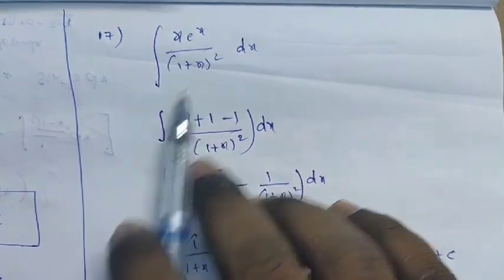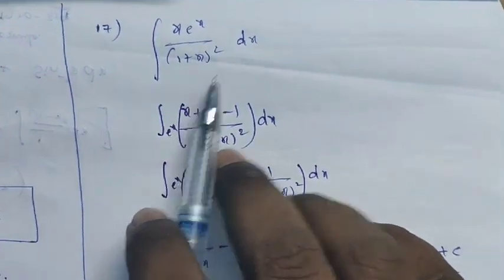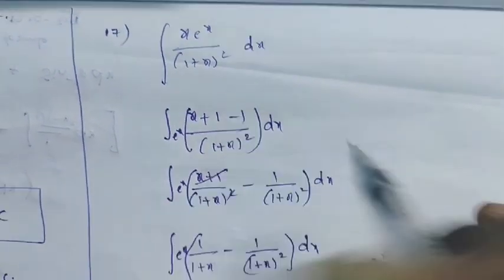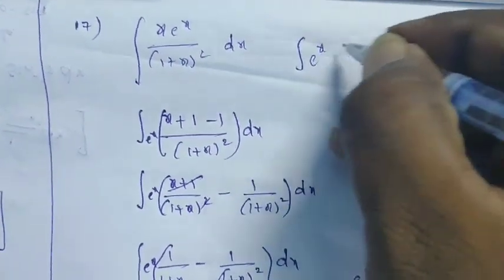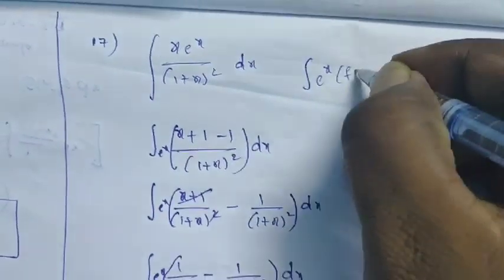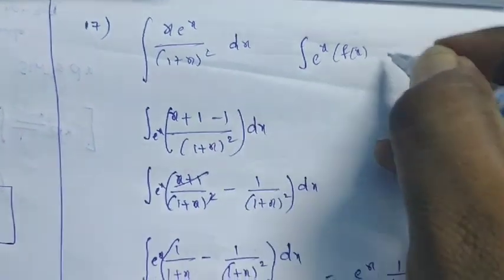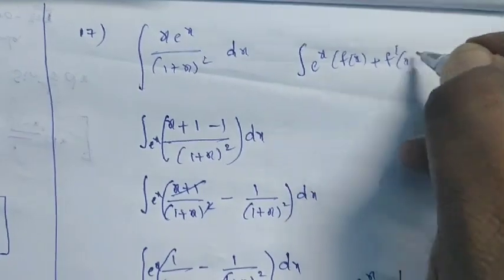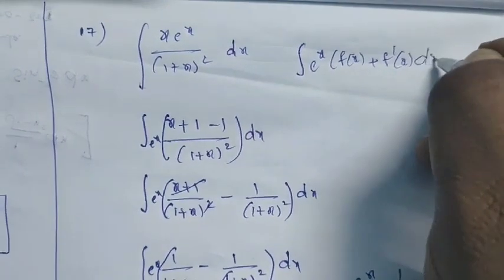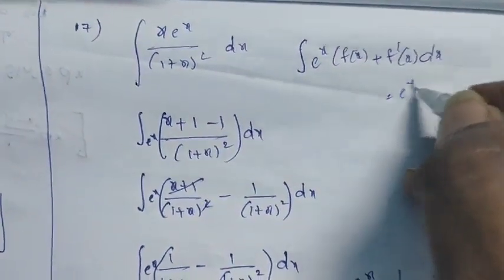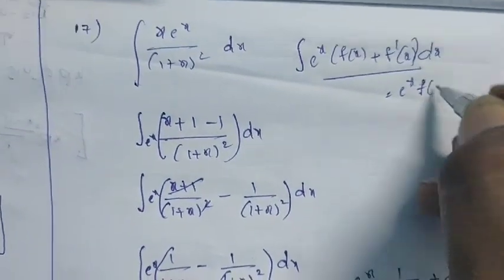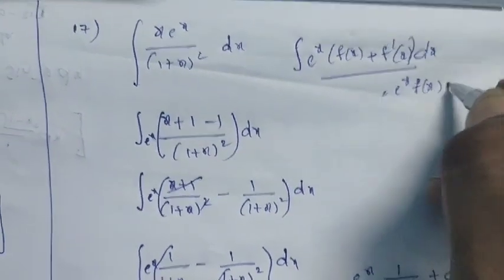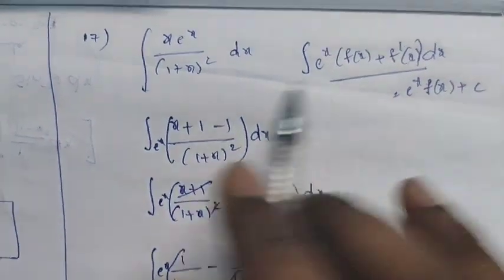One more problem: Integration of x·e^x / (1 + x)². We have to bring it into the form of the integral of e^x · [f(x) + f'(x)] dx, and then the answer will obviously be e^x · f(x) + constant.